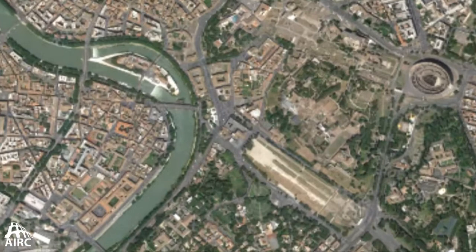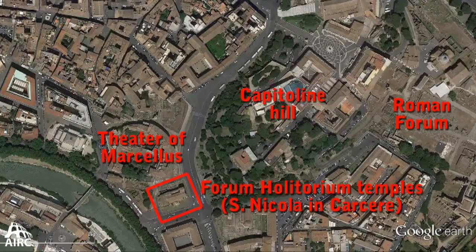Right now we're looking down onto the Forum Holitorium, or the vegetable market of ancient Rome. The kind of iconic structure that we associate with the Forum Holitorium is literally next door to the remains of the Theater of Marcellus.